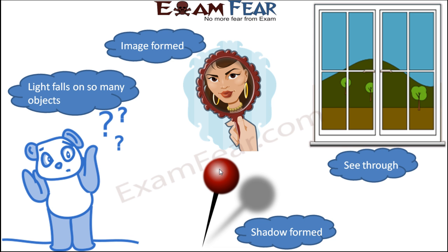Now if you take some other example — think of a glass window. When you look at a glass window, you are able to see whatever is there on the other side. If you are inside the house, through the glass window, you are able to see the objects which are present outside. So basically that window is like a see-through window. You are able to see whatever is there on the other side, but only in the presence of light. When light falls on this glass window, it enables you to see whatever is present on the other side.